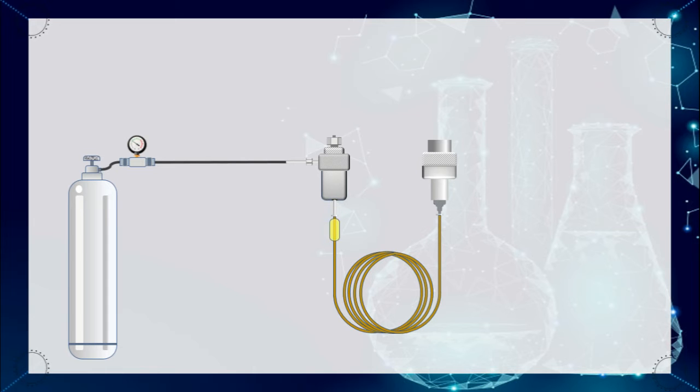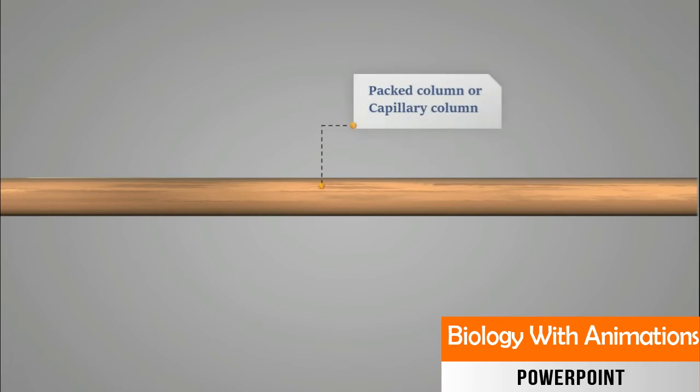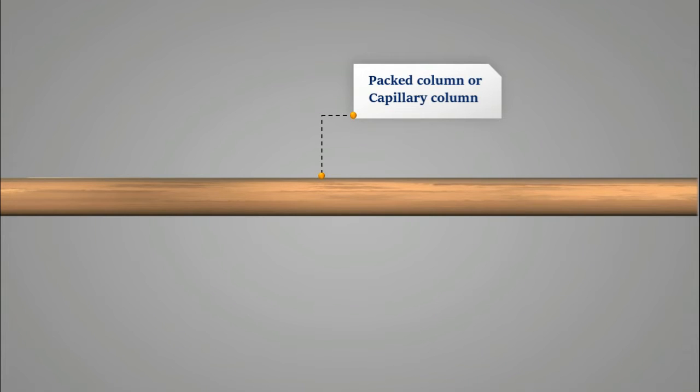Two types of columns are used in GC: packed column, where the stationary phase is coated directly in the column, and capillary column, where the stationary phase is coated on the inner wall of the column.